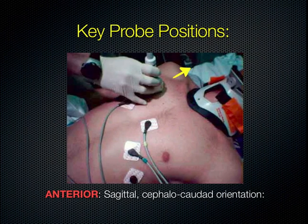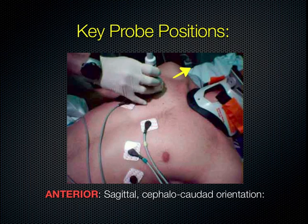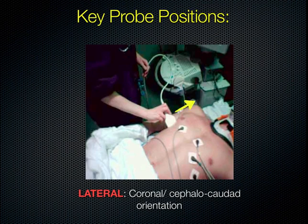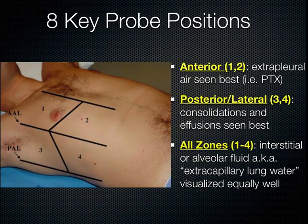There are several key probe positions. The indicator for evaluation of the anterior chest should go towards the head — this is the orientation marker. Anteriorly, we look at the sagittal orientation, the cephalocaudate orientation intersecting two ribs and the pleural line beneath. Laterally, with the probe indicator again towards the head, we achieve a coronal picture. It's important to scan all eight lung zones to evaluate for a complete chest exam: two anterior lung zones on the right and left, and two posterolateral lung zones on the right and left. All zones should be equally evaluated, and it doesn't take but a few seconds each.